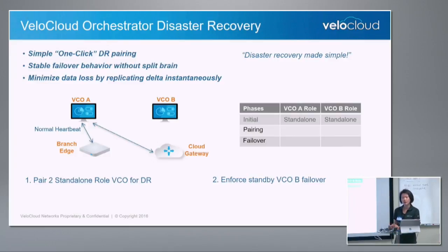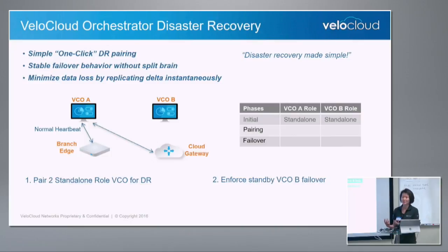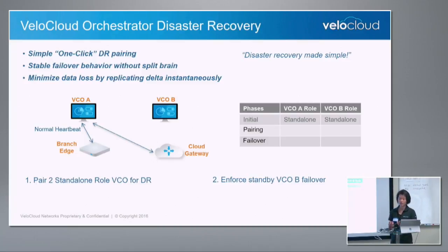There are a couple of issues with traditional disaster recovery. It's slow — it takes some time for the disaster recovery setup to be made. There is also split-brain behavior, which is quite common and something operators want to mitigate or avoid. And the question is: how do I make sure I have minimum data loss when I do this disaster recovery?